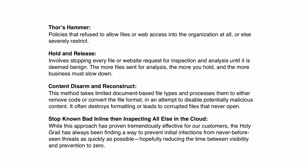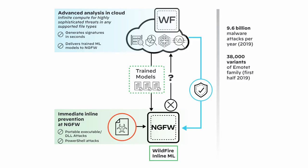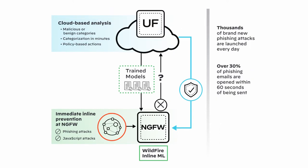But with PanOS 10 and this new patent signatureless inline WildFire machine learning, the next generation firewall can now inspect files at line speed and block malware variants of portable executables as well as PowerShell files, which account for a disproportionate share of malicious content. It can also inspect unknown URLs at line speed, identifying phishing pages and malicious JavaScript in milliseconds.